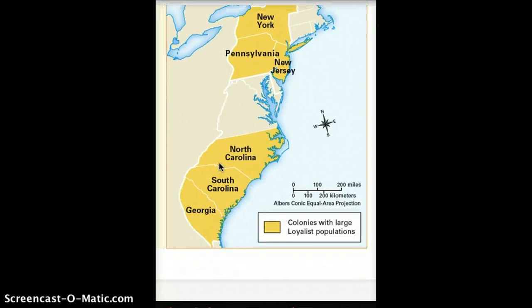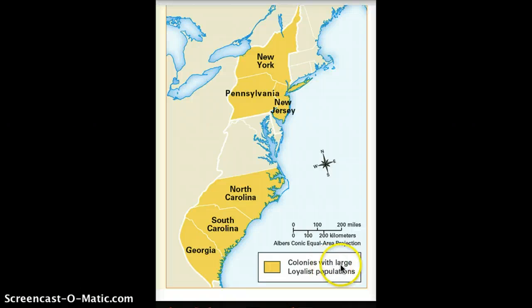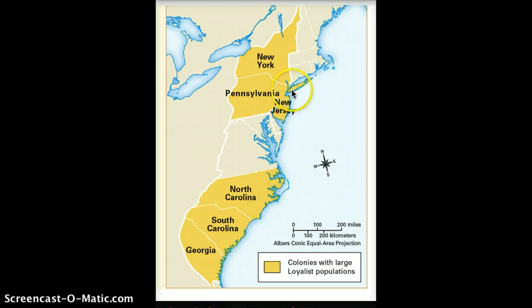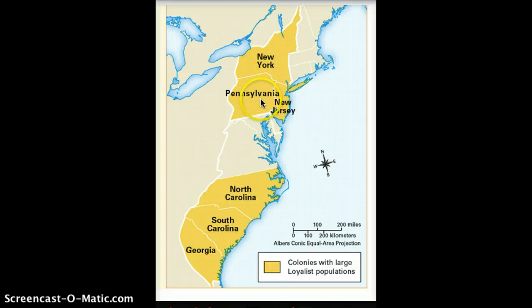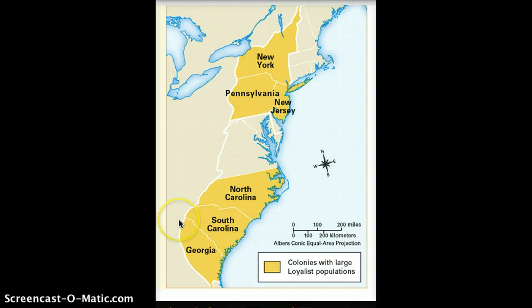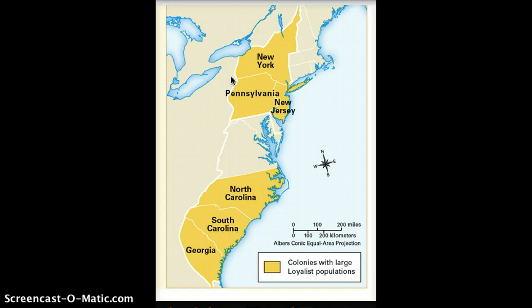Take a look at the map showing colonies with very large loyalist populations. When we compare it to our other map, we see that not every colony had a large loyalist population. Places like New York, Pennsylvania, New Jersey, North Carolina, South Carolina, and Georgia had large loyalist populations. What does that tell us in our quest for independence from Great Britain? Are they going to help the cause of independence or make it more difficult? Those are questions we need to think about as we approach Chapter 5.